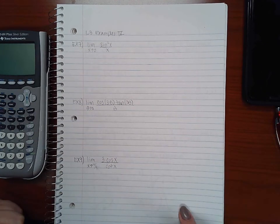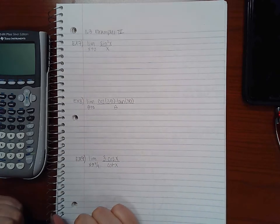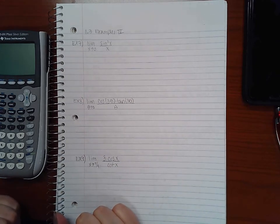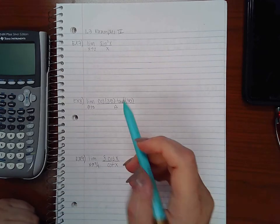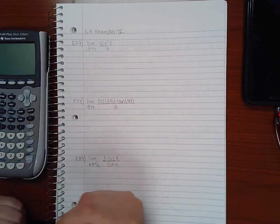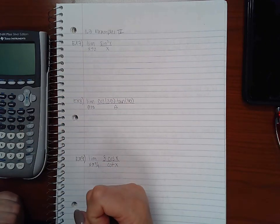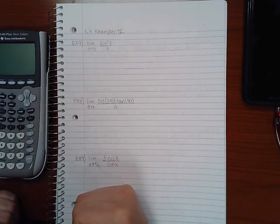This section or this video is going to be over 1.3 examples part four. We're going to continue with example seven. Here we cannot direct substitute because if I plug in zero in the denominator, I'm going to end up with one of those indeterminate forms again or end up with an undefined number.